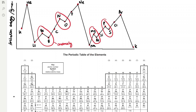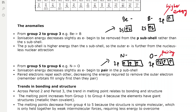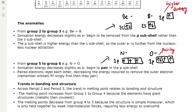The circled anomalies show small deviations in the trend of ionisation energies increasing across periods. The first anomaly is from group 2 to group 3 — for example, beryllium to boron — where ionisation energy actually decreases slightly as electrons begin to be removed from the P subshell rather than the S subshell. The P subshell is higher energy than the S subshell, so the outer electrons are further from the nucleus, leading to less nuclear attraction and less energy required to remove them. Beryllium has two electrons in the 2S subshell and none in P; boron has two in 2S and one in 2P. The 2P subshell is higher energy and further from the nucleus, causing this slight anomaly before the trend increases again.